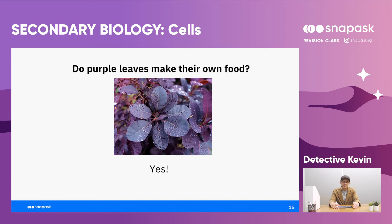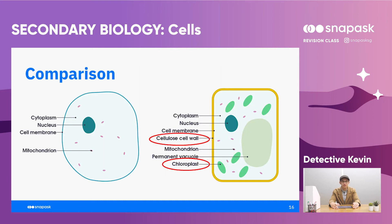Why do purple leaves make their own food? It's because they have another pigment, but it's not green. They still have chloroplasts and are able to absorb sunlight. When they are able to absorb sunlight, they can photosynthesise and make food. The main differences between plant and animal cells are the cellulose cell wall and the chloroplast, both found only in plant cells.